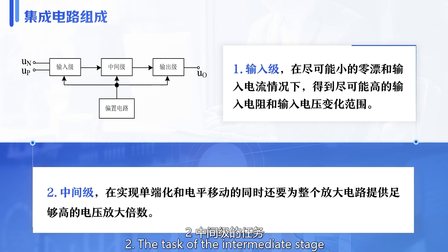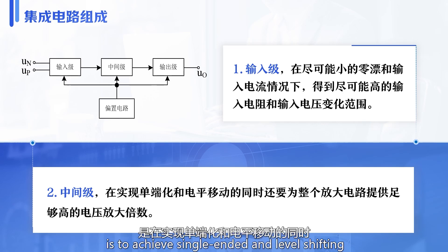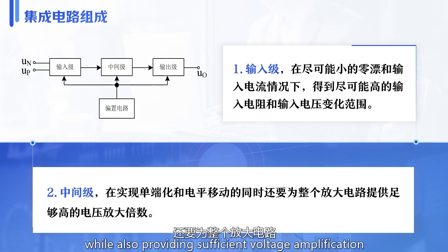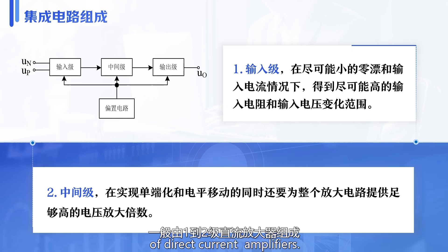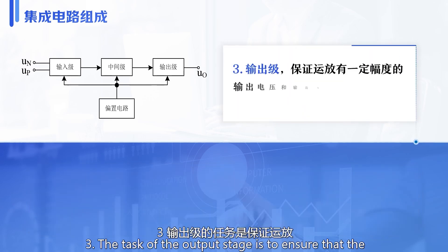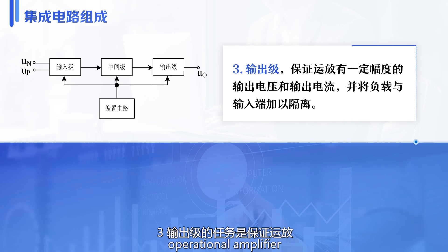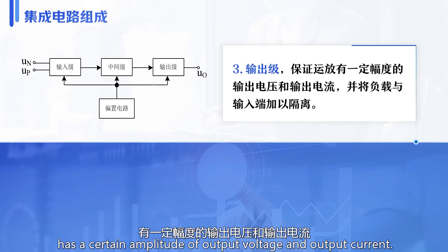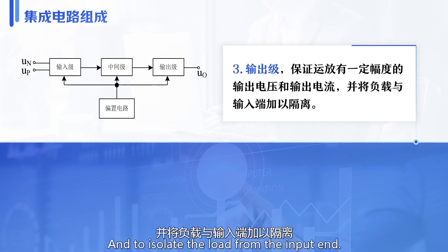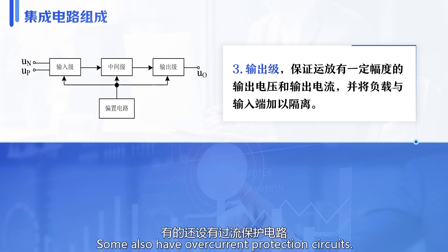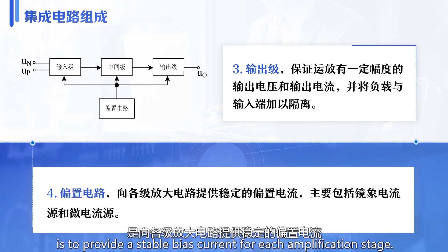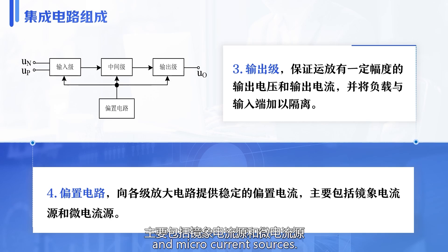The task of the intermediate stage is to achieve single-ended output and level shifting, while also providing sufficient voltage amplification for the entire amplification circuit. It is generally composed of one to two stages of direct-coupled amplifiers. The task of the output stage is to ensure that the operational amplifier has a certain amplitude of output voltage and output current, and to isolate the load from the input end. It is generally composed of a single-ended or complementary emitter follower, and some also have overcurrent protection circuits. The task of the bias circuit is to provide a stable bias current for each amplification stage, mainly using mirror current sources.